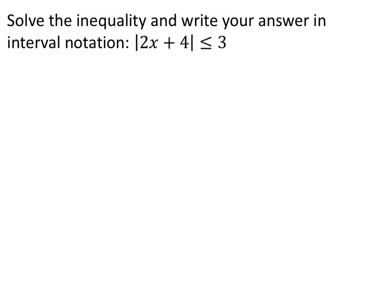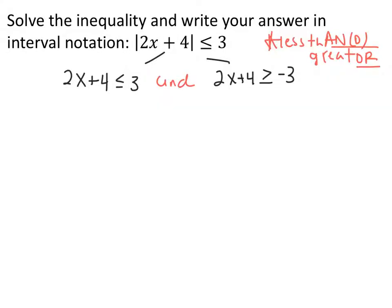When solving an absolute value inequality, split it into two parts — just like absolute value equations — where one side stays positive and one side is made negative. The only difference is on the negative side, you flip your inequality. Make sure you isolate the absolute value first before splitting. The first inequality keeps the inside and the sign the same; the second flips the inequality and changes the sign. Less than gives an AND relationship; greater than gives an OR relationship.